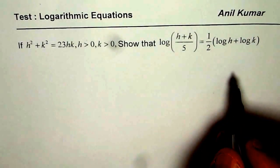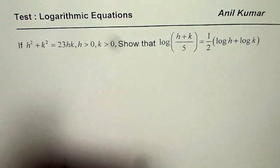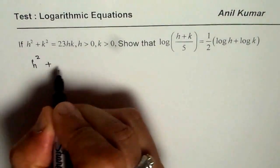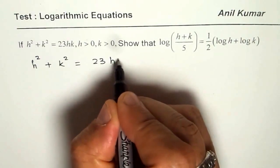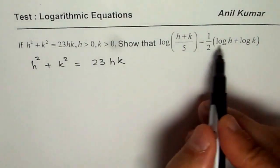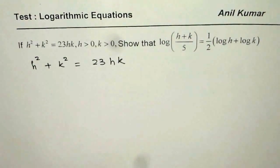Some of you can pause the video, solve the question, and then look into my suggestion. So let us begin with what is given to us. We are given h² + k² = 23hk. We need to do this kind of a thing.